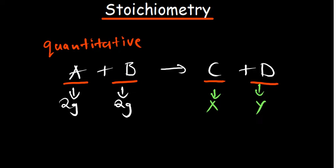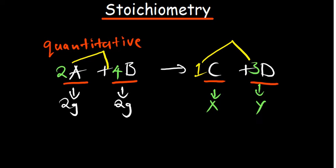Apart from having our reactants and their products, they also come with stoichiometric coefficients — let's say we have a two, a four, a one, and a three. We call these mole ratios, and you'll realize they are going to be very useful in forming relationships among our reactants and between the reactants and the products.